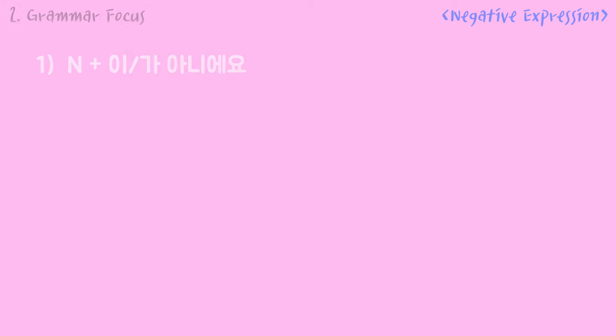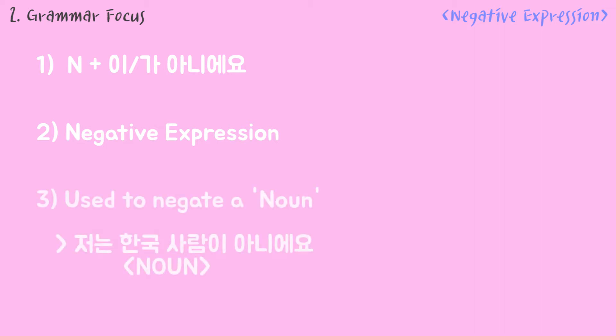Grammar focus: a noun goes before 이, 가, 아니에요. This is a negative expression. It is used to negate a noun.